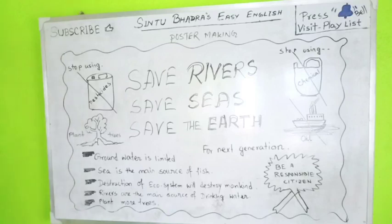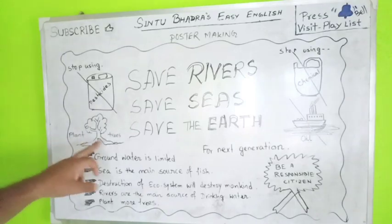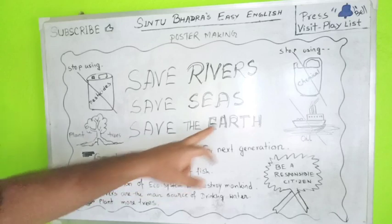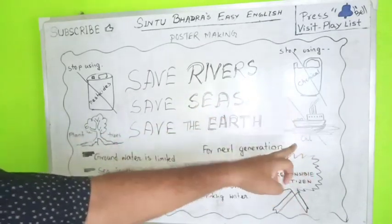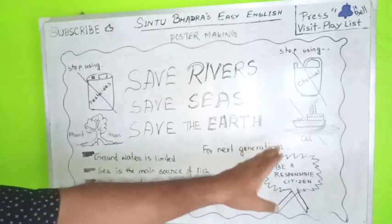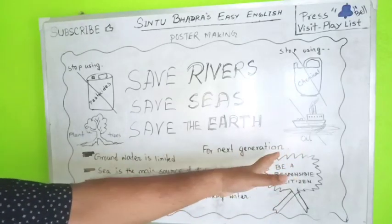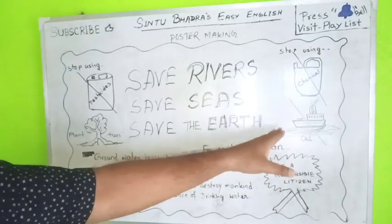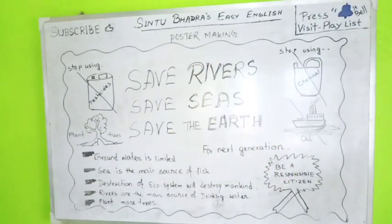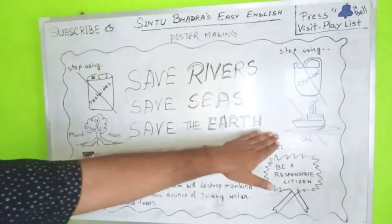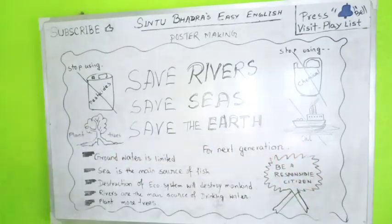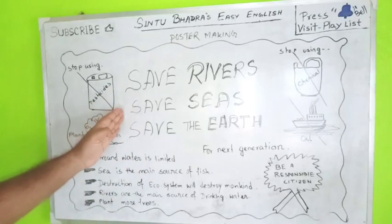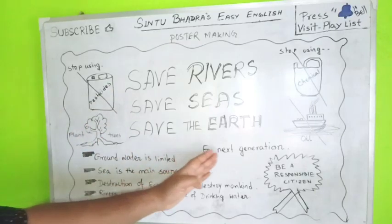We have to cross out harmful practices, plant trees, and stop using chemicals. The oil tanker will be removed from the soil. Save rivers, save seas, save the earth for the next generation.